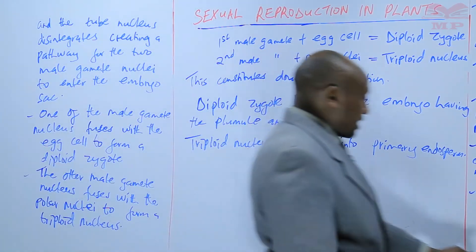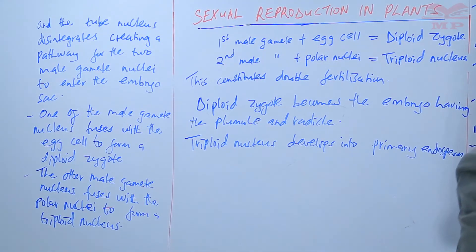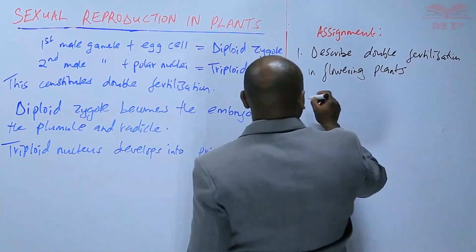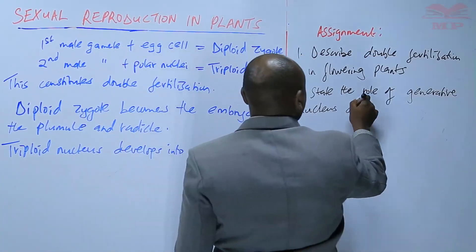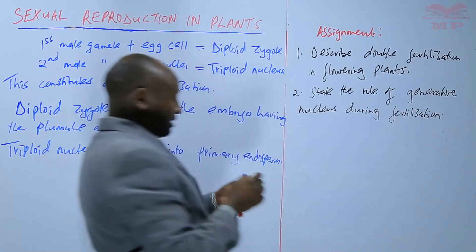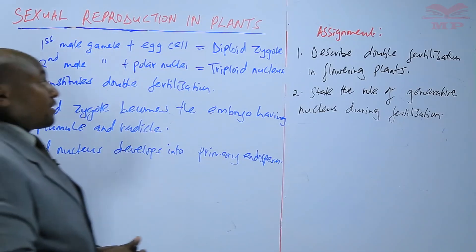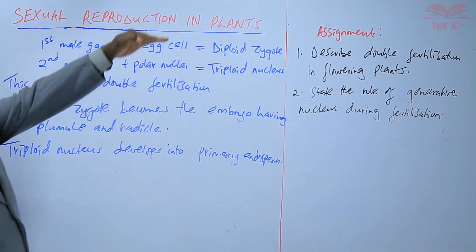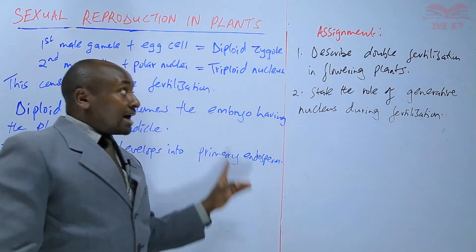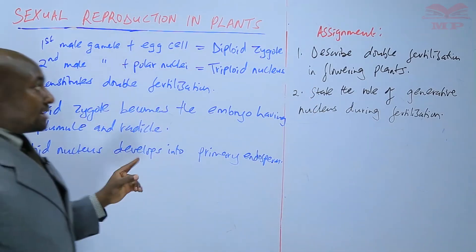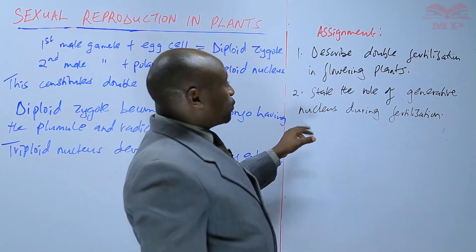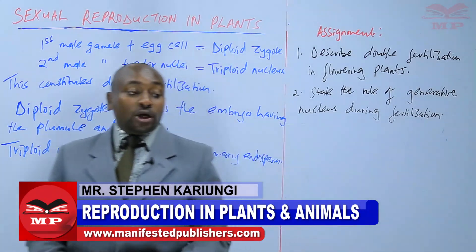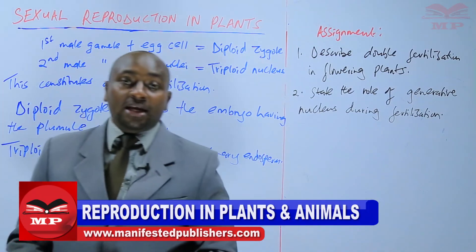We are going to have a short assignment on what we have learnt. The first question: describe double fertilization in flowering plants. These are questions that can come as an essay, requiring one to explain from the time pollination takes place all the way until fertilization is completed. Then number two: state the role of the generative nucleus during fertilization. We are going to stop there and continue next time. Goodbye.